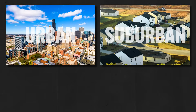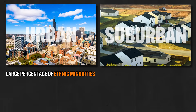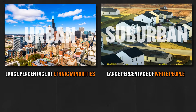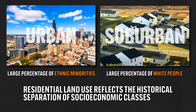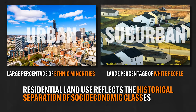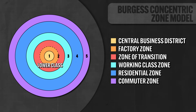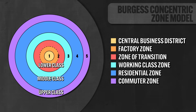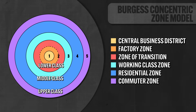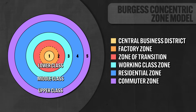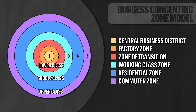For example, in many American cities there is a very clear racial division between where people live. Generally speaking — and this is a generalization — urban areas with high population density tend to be made up of a large percentage of ethnic minorities, while the suburbs reflect a large percentage of white residents. Residential land use reflects the historical separation of socioeconomic classes. As cities grew in the early 19th century, lower-class residents remained close to their workplaces in the city center, while middle and upper-income classes moved outward toward the periphery. The result was increasing spatial division of economic classes, which also happened to largely correspond to racial categories.